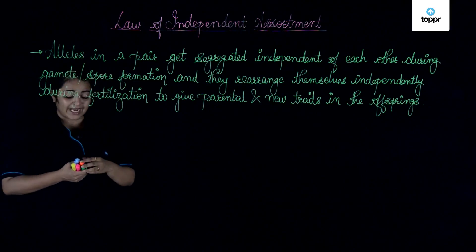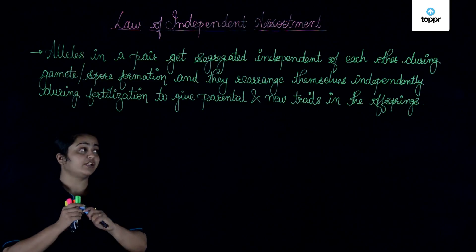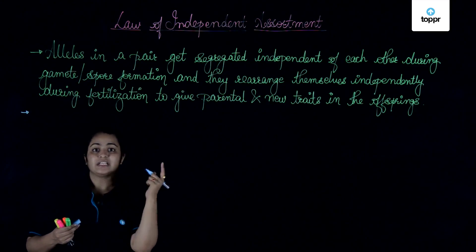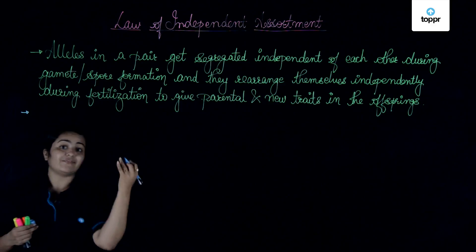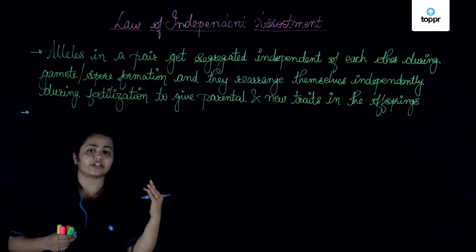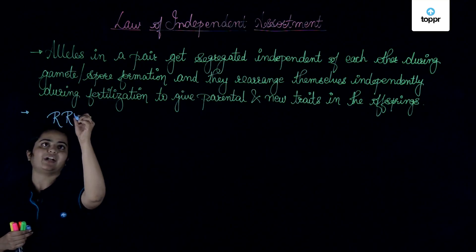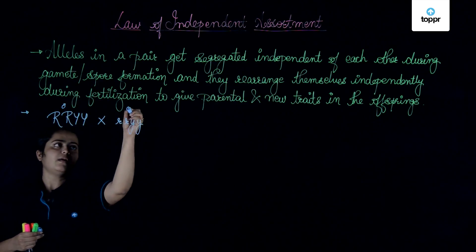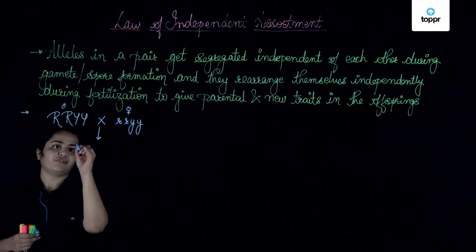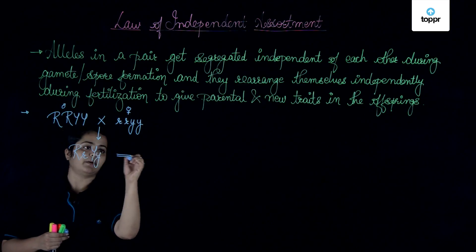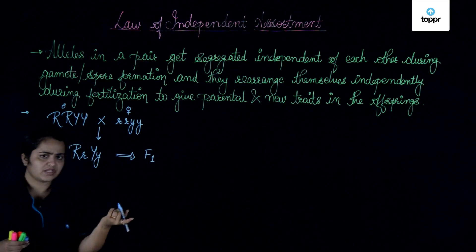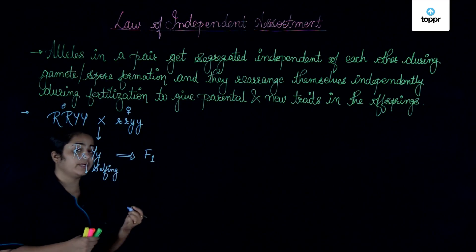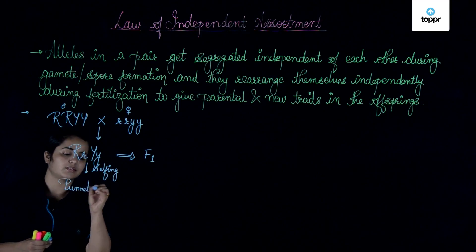This is what we try to study in the dihybrid cross. Let's take an example of the dihybrid cross to understand this better. We take the example of the same traits — round and wrinkled seed, along with yellow and green color of seed. When we know how a dihybrid cross is done, let's do it in a simplified manner. We have round and yellow crossed with wrinkled and green — male and female gametes. In the complete F1 generation, all of them will be the same. Now, what happens when you carry out selfing to get the F2 generation? We do it with the help of a Punnett square.